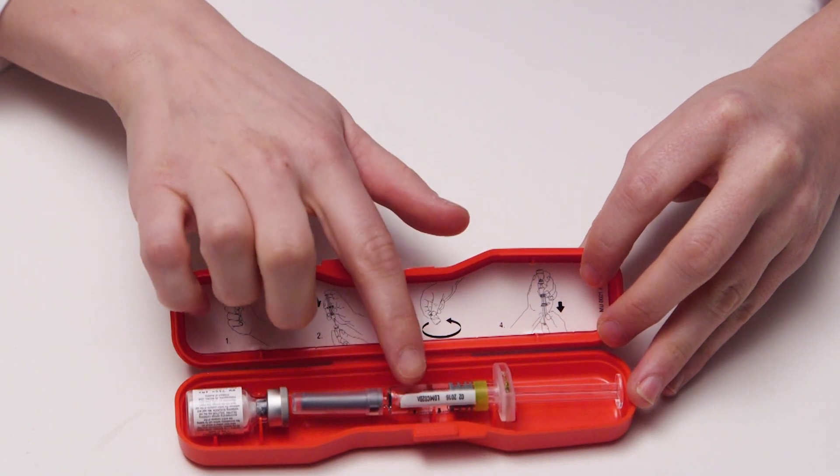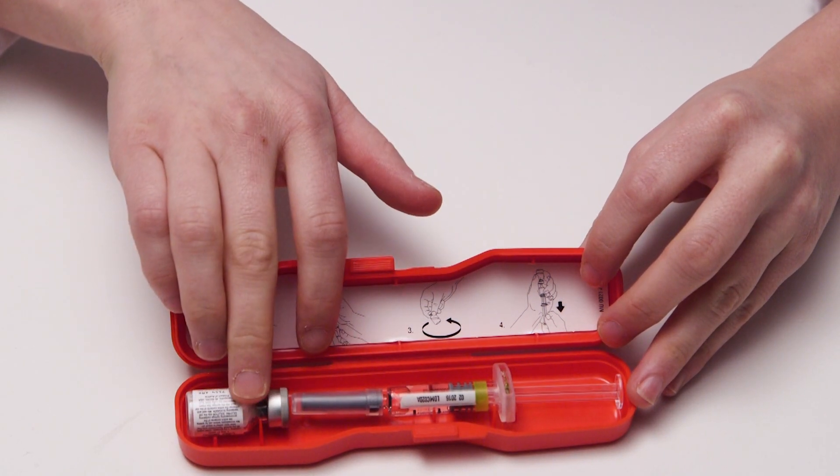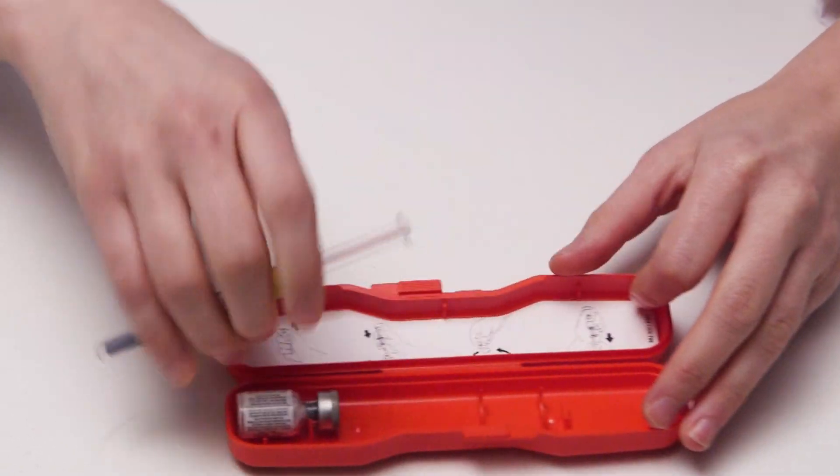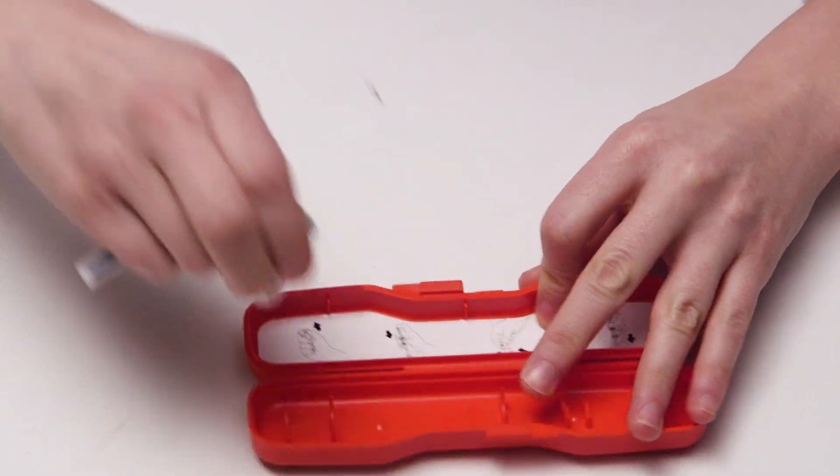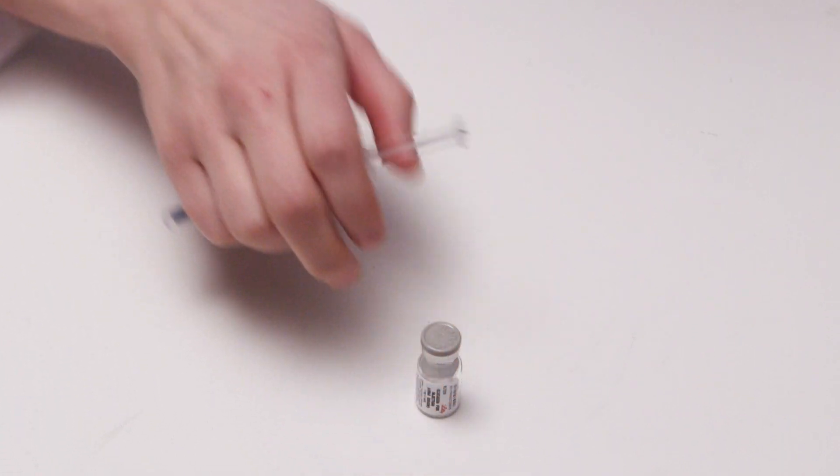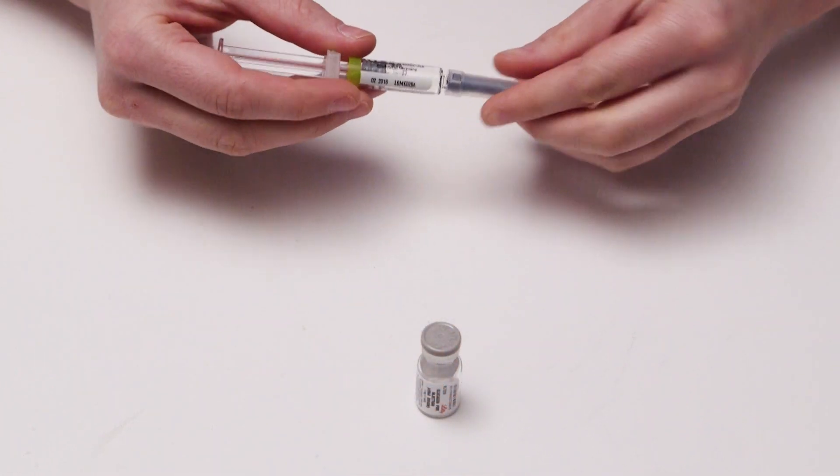You will need to inject the fluid into the vial to mix up the medication. To do this, set the vial on a hard surface and inject the fluid into the vial.